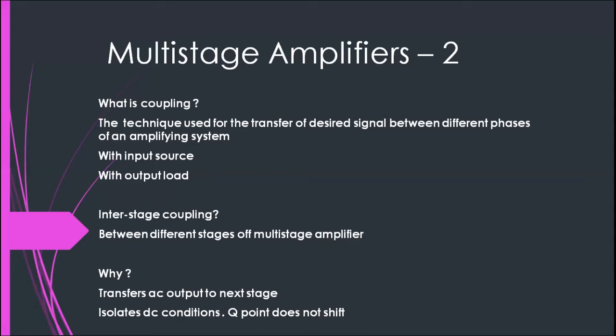This shift in the quiescent point will affect the operation, the efficiency, and the working of the amplifier system as a whole. So we need to isolate different stages of the amplifier. For this purpose also, we are using the inter-stage coupling. These are the reasons by which we depend largely on inter-stage coupling, particularly in the case of multi-stage amplifiers.